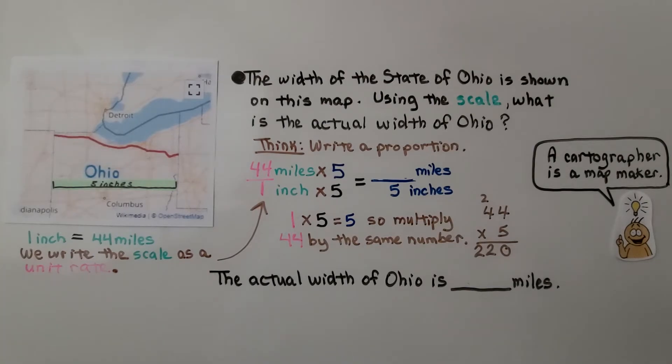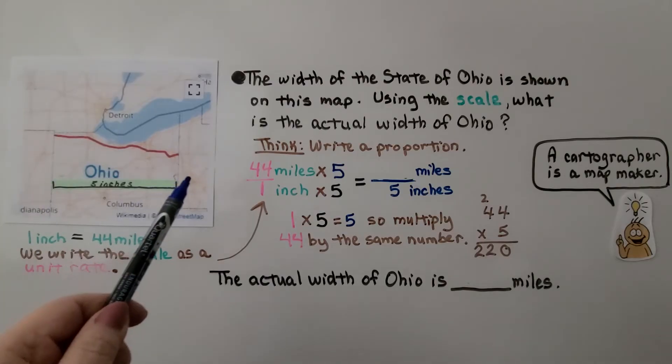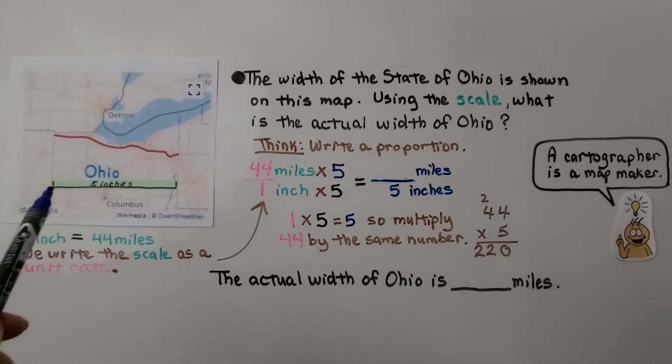The width of the state of Ohio is shown on this map. Here's the western border, and here's the eastern border, and it's saying on the map this is 5 inches. Using the scale, what is the actual width of Ohio? It's telling us 1 inch is equal to 44 miles, and this is 5 inches. So we can write the scale as a unit rate.